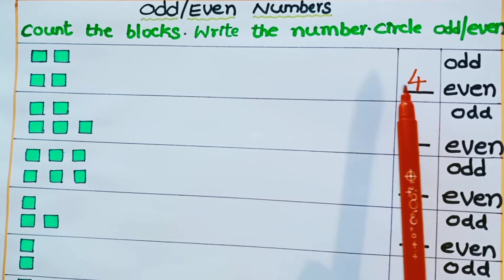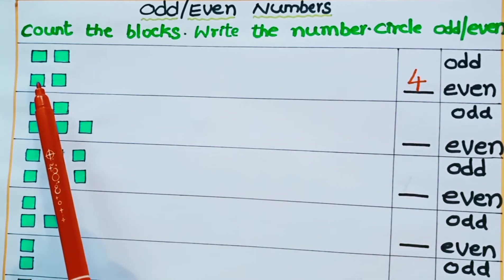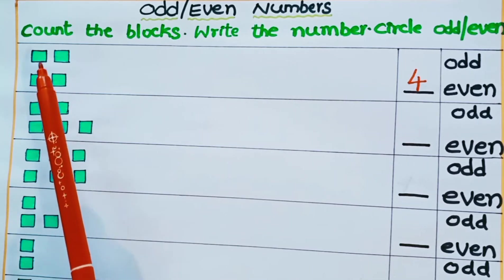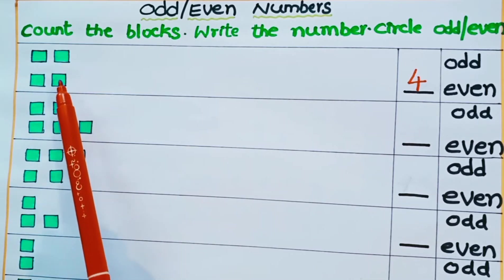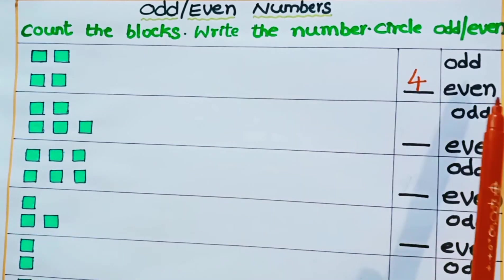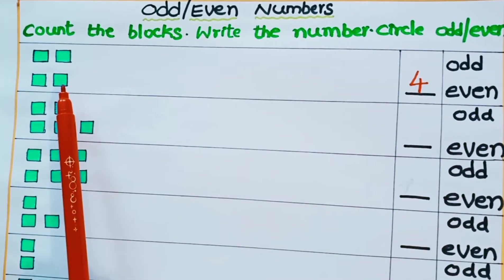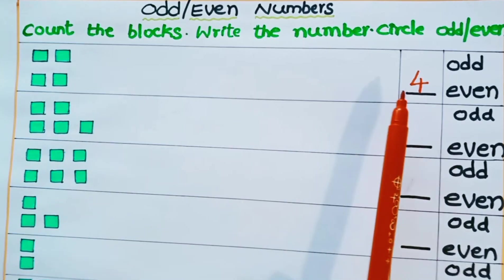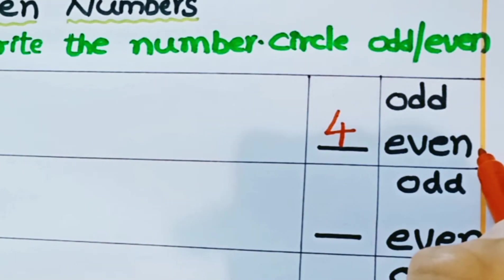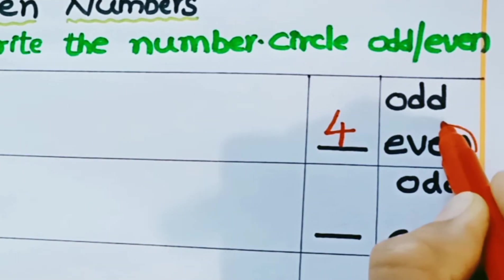Let us check whether the 4 blocks can form pairs or not. 1, 2 — that is one pair. 3, 4 — another pair. So 4 is an even number. No more block is left alone, so 4 is an even number.